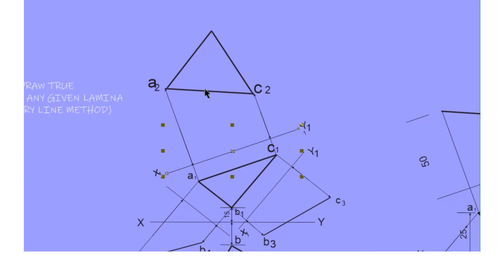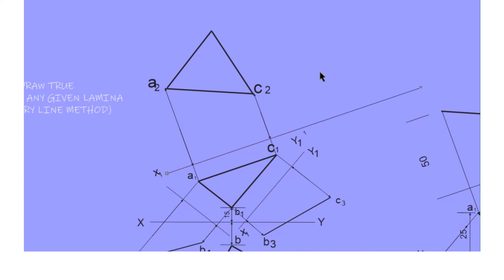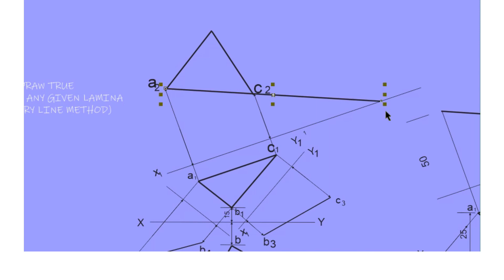The first line — if you project the A2C2 line onto the X1Y1 line, it will give you the answer to that question. You extend your X1Y1 line, and also extend the A2C2 line as you can see me doing, so where it hits the X1Y1 line gives the trace.